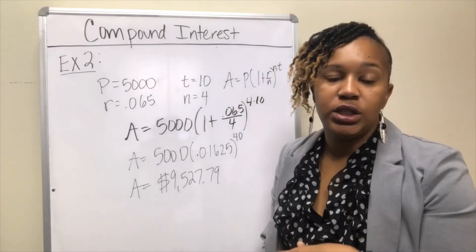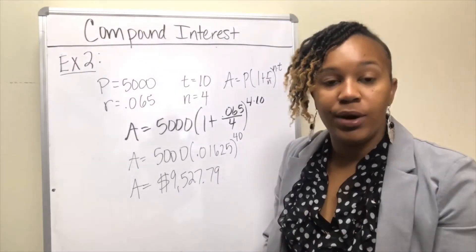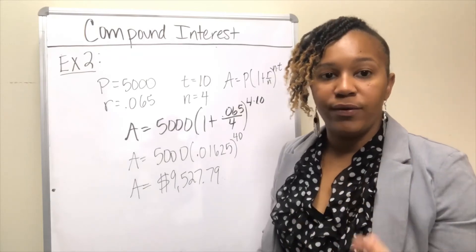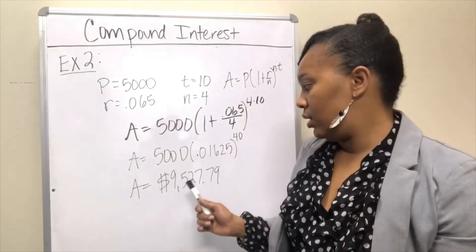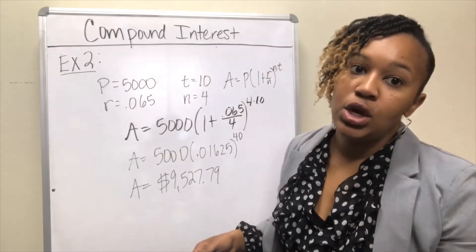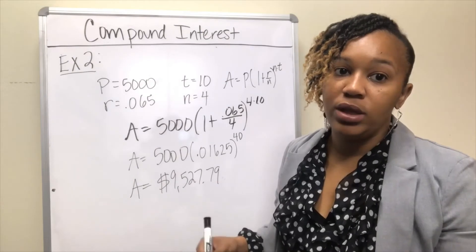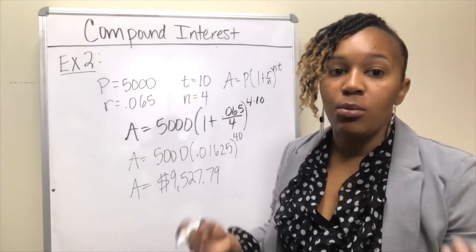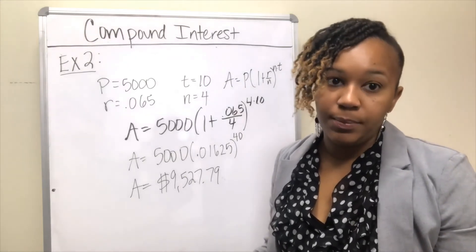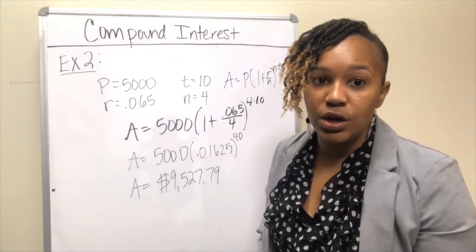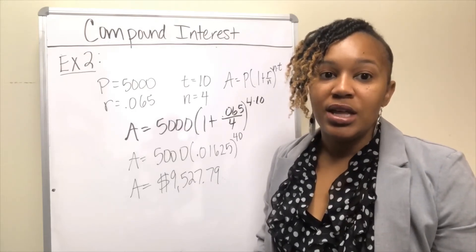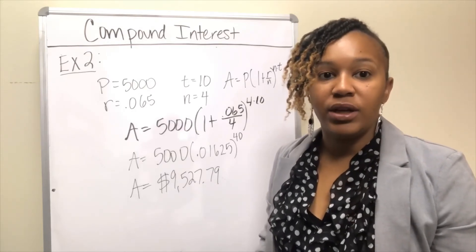If you compare this solution with the solution we got in example one—remember it is the same scenario, except in this case interest was compounded more frequently—you'll notice that this one came out to more. This one was $9,500 and something, the last one was $9,300 and something. One thing you can take away from this is that the more often the interest is compounded by the institution, the more money you get. There's another scenario where your money can be compounded continuously, so there's a different formula for continuous compounding.